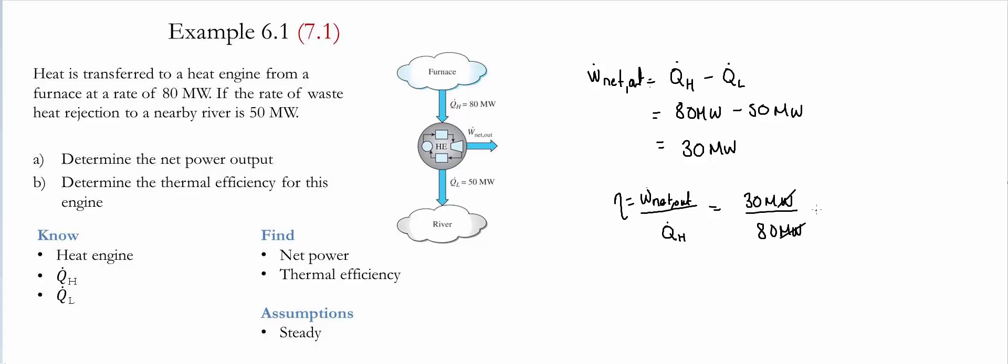We take 30 megawatts divided by 80 megawatts. The units cancel. Efficiency has to be a unitless value. And then this value gives us 0.375, or 37.5%.